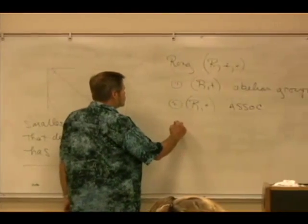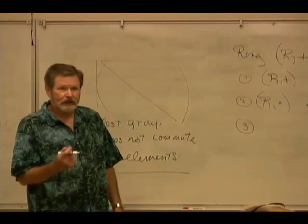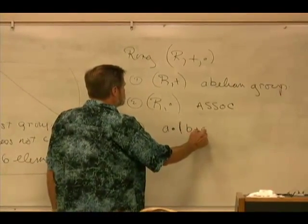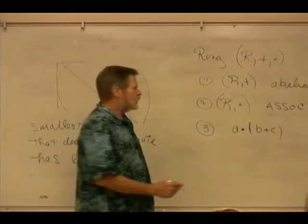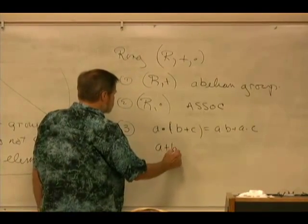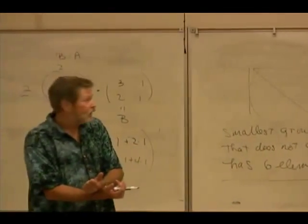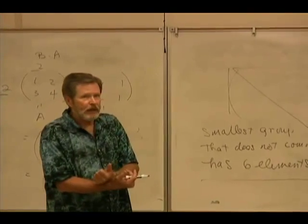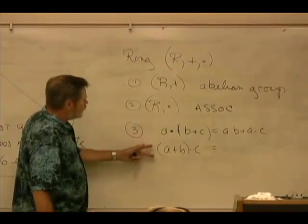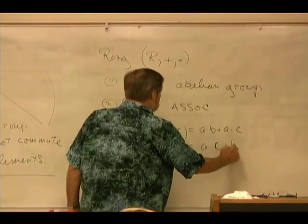But there is one other condition. Since there are two operations, how do they interact with one another? Those are the distributive laws. The left distributive law says that multiplication distributes over addition. So A times the quantity B plus C is A times B plus A times C. Since multiplication is not commutative, I can't just turn this around. I also have to talk about the right distributive law, which is the quantity B plus C times A equals B times A plus C times A.